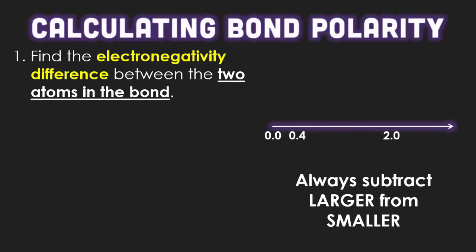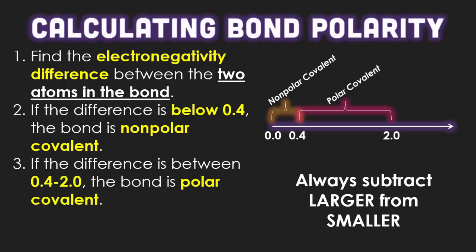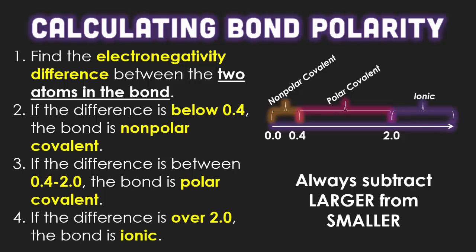When we calculate bond polarity, you have to find the electronegativity differences between the two atoms in the bond. A bond can only be created between two atoms. We're going to be looking at nonmetals and nonmetals when they're bonded together for covalent bonds. If you take the larger of your electronegativity number and subtract it from the smaller, and the number is less than 0.4, we call these bonds nonpolar covalent. If the difference is between 0.4 and 2.0, we call these bonds polar covalent. And if the difference is over 2.0, we refer to these bonds as ionic.